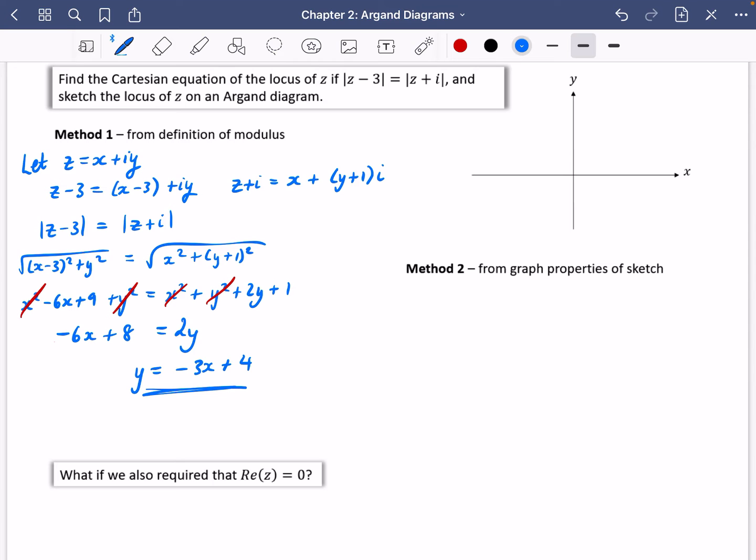We're now going to do the second method, which is from the properties, graph properties of a sketch. So the two numbers that it's going to be in between is going to be I, which is just basically one I. So you can either think of it as an I or you can think of it as a one I, and then three over here.